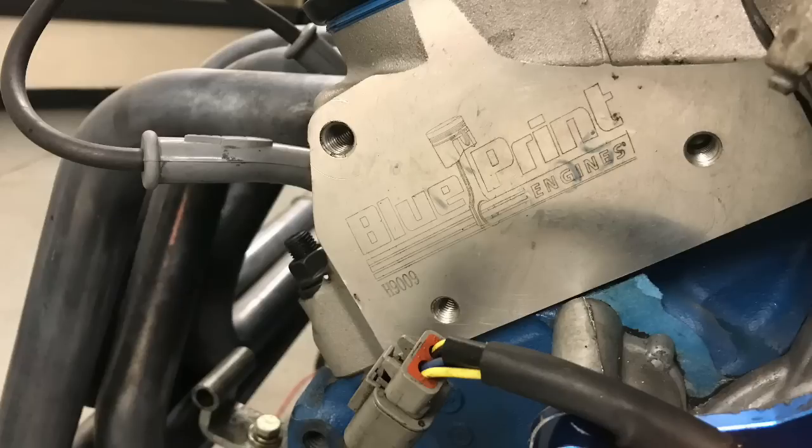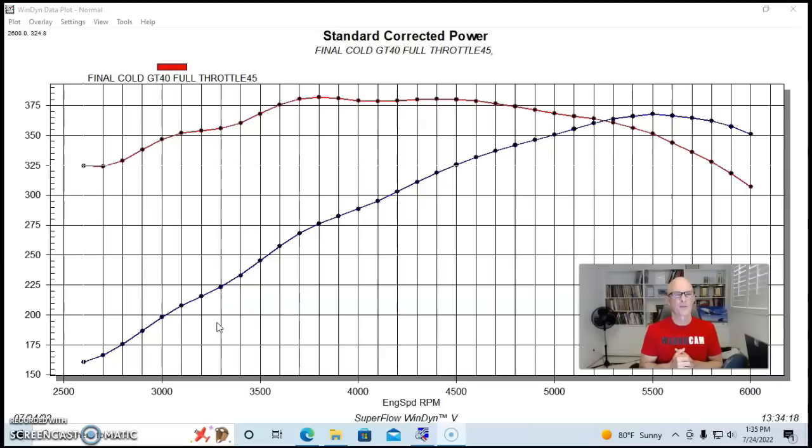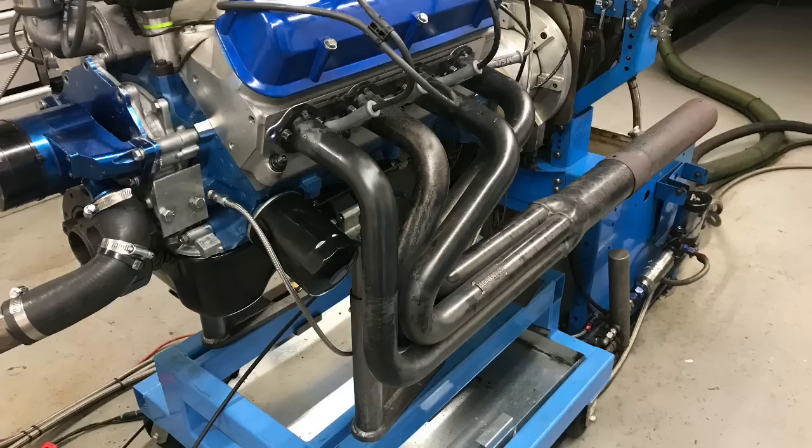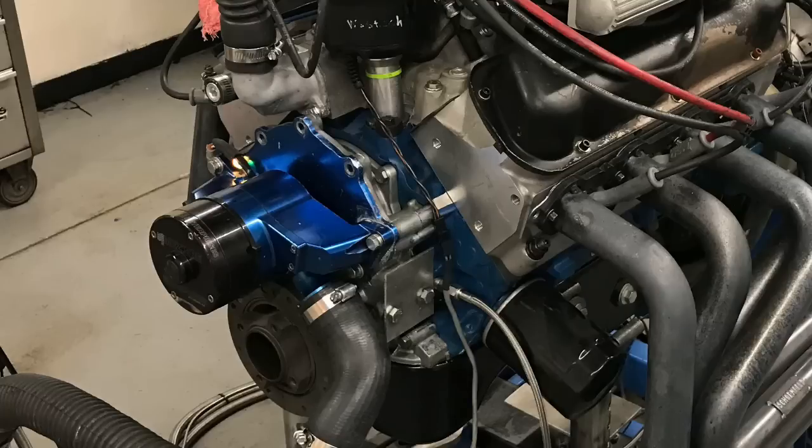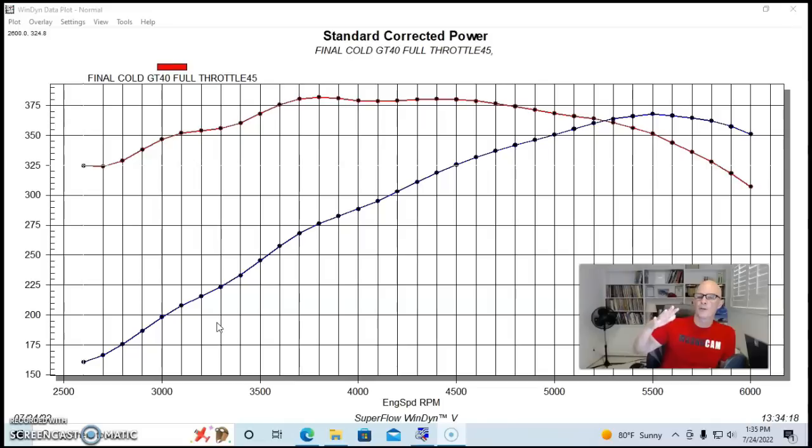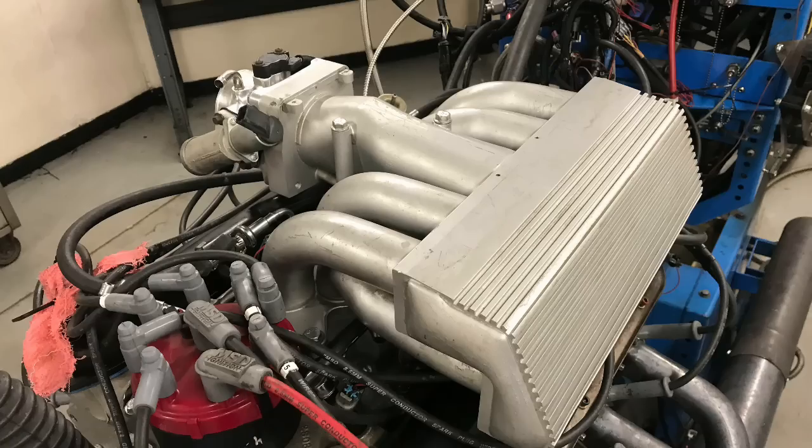We did put a set of blueprint aluminum heads on it. For this test, it had an E303 Ford Racing camshaft in it. It also had long tube headers. We ran it with a Bezier electric water pump and a Holley HP. We had good size injectors on it.